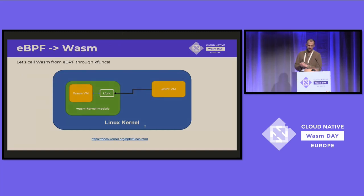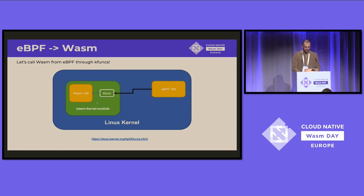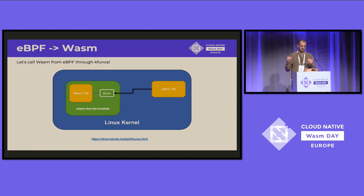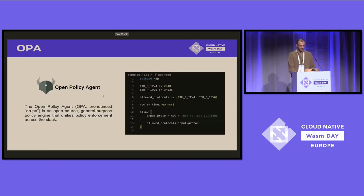Here's how you can call Wasm from eBPF code. At the kernel level, we have the eBPF VM ready to accept eBPF applications. We also have a kernel module with a Wasm VM inside it. We expose a module method as a KFUNC — a kernel feature that exposes a function to eBPF. KFUNCs are marked with some C magic and can then be found and called by an eBPF module.